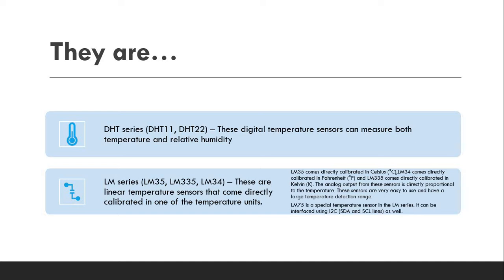The first one is DHT series. The DHT series has got two sensors available here: DHT11 and DHT22. Most commonly used sensors, they are from this series and they are digital temperature sensors which can measure both temperature as well as relative humidity. You need to understand we are getting one more thing in addition to temperature measurement: we also get the relative humidity very clearly measured.